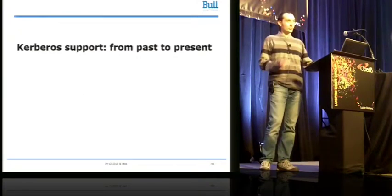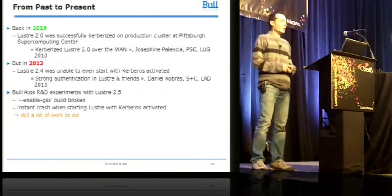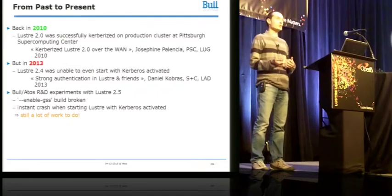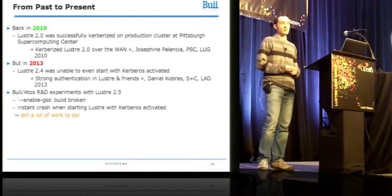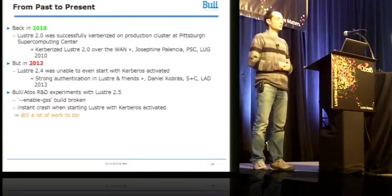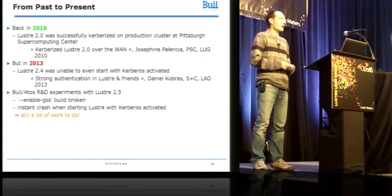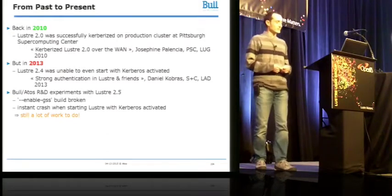Here is an historical background of Kerberos support in Lustre. Back in 2010 at LUG, there was a presentation from PSC explaining how they managed to make Lustre 2.0 work with Kerberos on a production cluster over a wide area network. But back in 2013, there was a presentation at LAD from SPC explaining that Lustre 2.0 was no longer able to handle Kerberos. So one year later at Buhl, we decided to test Kerberos support with Lustre 2.5. We first noticed that the build system was broken for Kerberos, but even when we fixed that, we got an instant crash when starting Lustre with Kerberos activated. Our conclusion at that time was that there was still a lot of work to do.